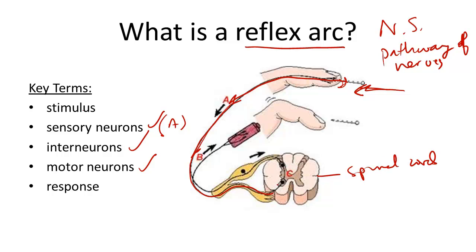In the spinal cord, labeled C, there are interneurons.